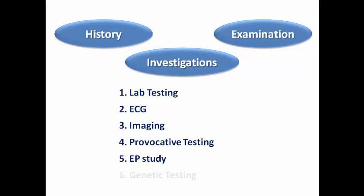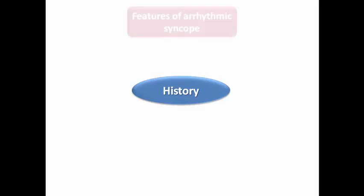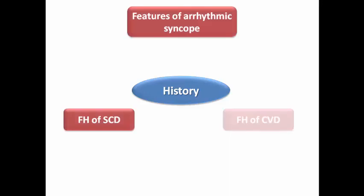In the history we focus on three points: features of arrhythmic syncope, family history of sudden cardiac death, and family history of cardiovascular disease.